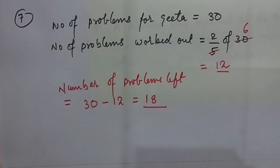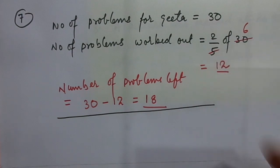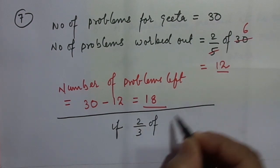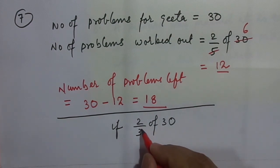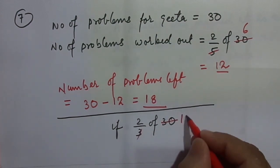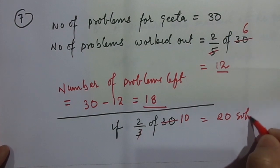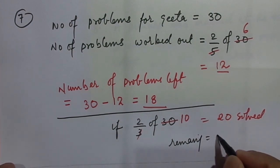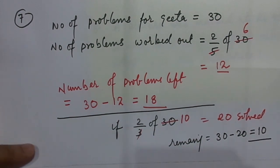Sometimes you might also get — there are few books which state that she worked out two by three of thirty. So if two by three of thirty sums have been solved, then in that case, three ten times is equal to twenty problems solved. Therefore, remaining will be thirty minus twenty is equal to ten problems remaining, which she can do it if she keeps on working consistently.